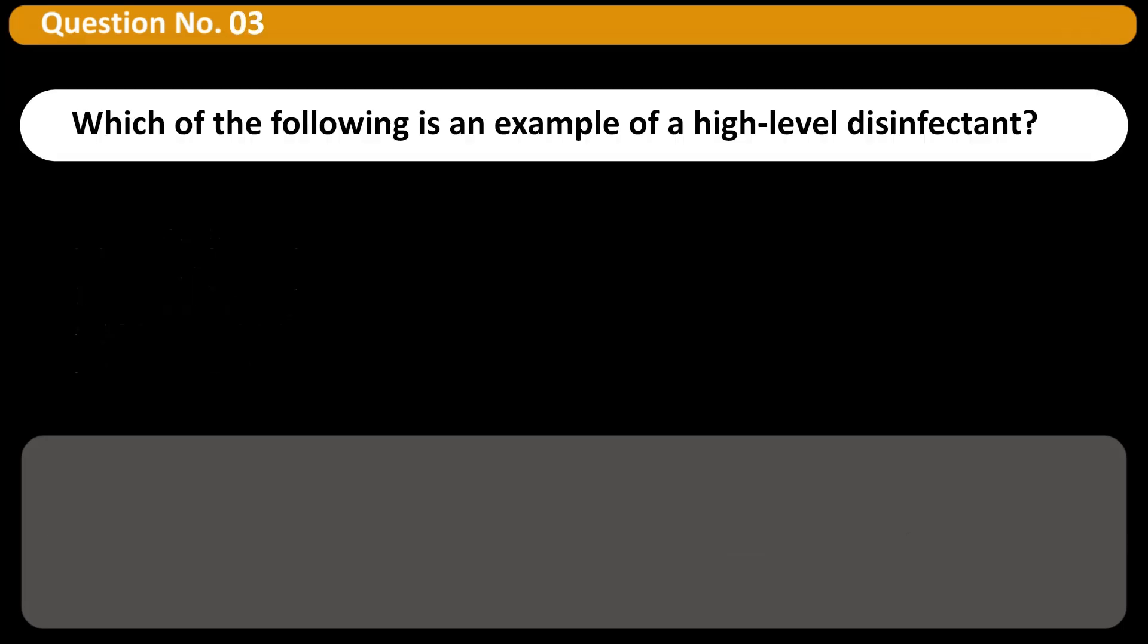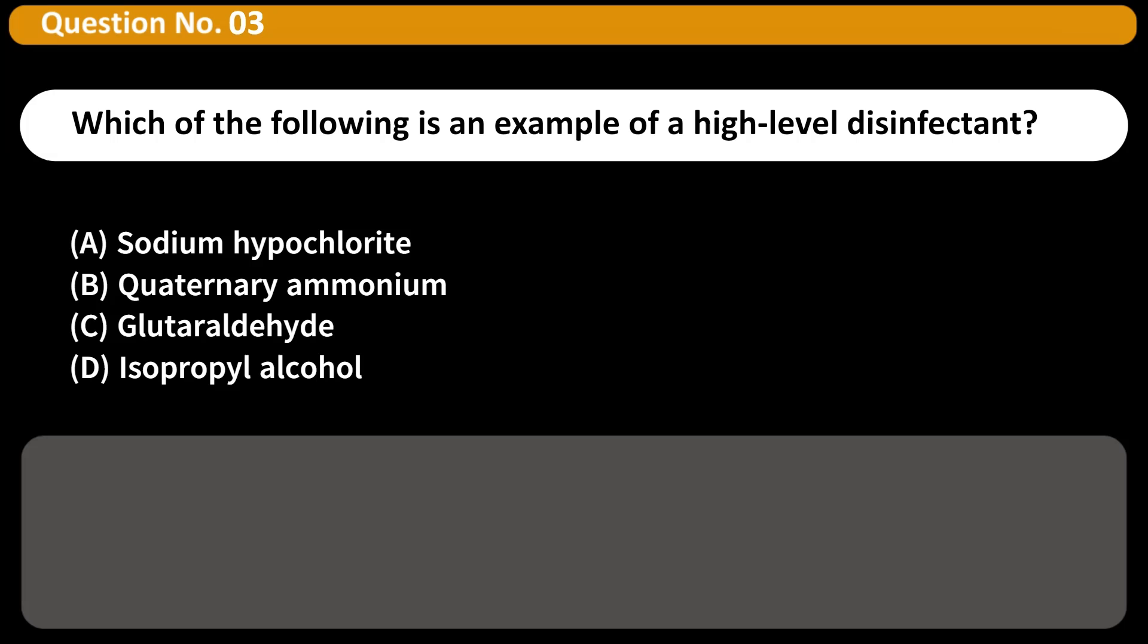Which of the following is an example of a high-level disinfectant? A. Sodium hypochlorite, B. Quaternary ammonium, C. Glutaraldehyde, D. Isopropyl alcohol. Answer C. Glutaraldehyde is classified as a high-level disinfectant, used for semi-critical devices.